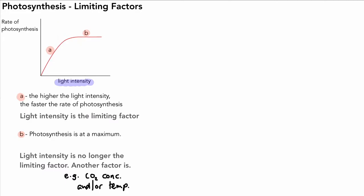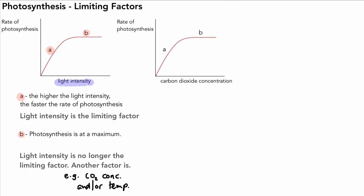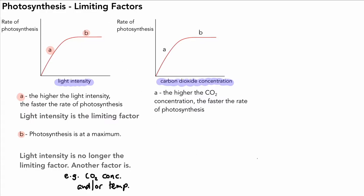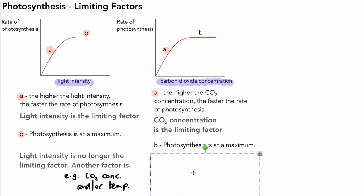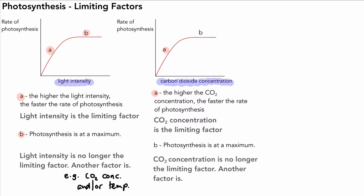What would a graph of carbon dioxide concentration versus rate of photosynthesis look like? The shape is very similar, with region A and region B again. In region A, the higher the CO2 concentration, the faster the rate of photosynthesis — CO2 concentration is the limiting factor. In region B, photosynthesis is at a maximum and CO2 is no longer limiting. In that case, either light intensity or temperature is the limiting factor.